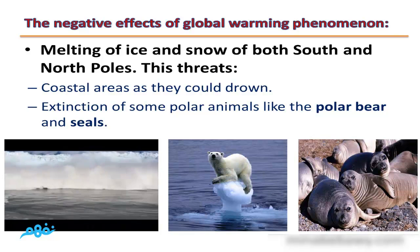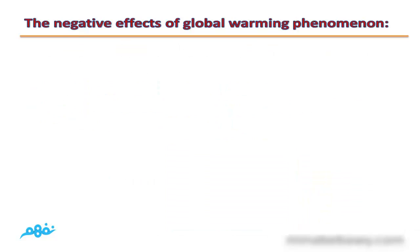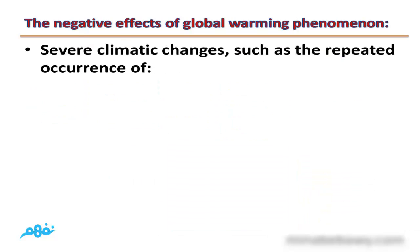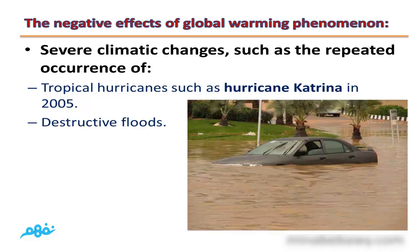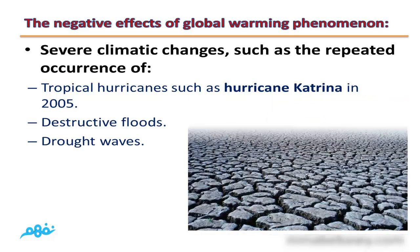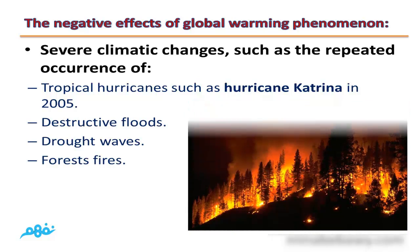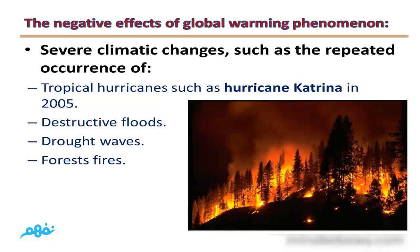It will also cause the extinction of some polar animals like polar bears and seals. The second negative effect is severe climatic changes, such as the repeated occurrence of tropical hurricanes like Hurricane Katrina in 2005, destructive floods, drought waves, and forest fires.